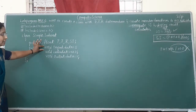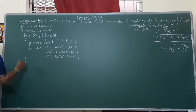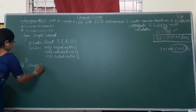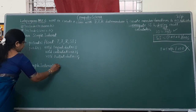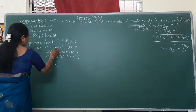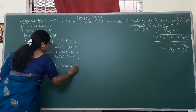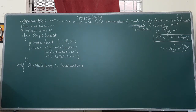Now we are defining these member functions outside the class. What is the syntax? Return type — the return type I have used is void. Then the class name: simple_interest. Then the member identity label — that is your scope resolution operator. Then the function name: input_data. There is no semicolon here because immediately the body of the function is created.